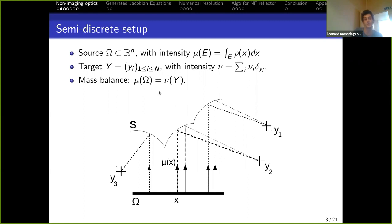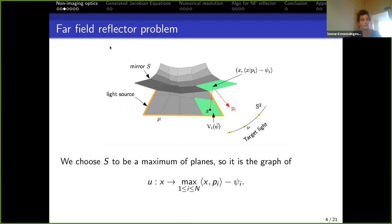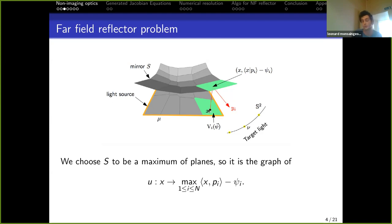Now I'll present the far-field reflector problem. We consider a collimated source, meaning all light rays emanate vertically — they are all parallel. The intensity of the ray from point x is μ(x), and the target consists of directions on the sphere. Since we are aiming at directions at infinity, in the simplest case with one unique direction the obvious solution is a plane reflecting all rays toward the same direction.